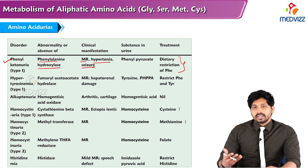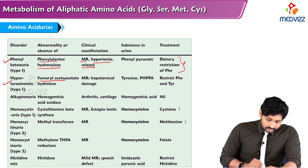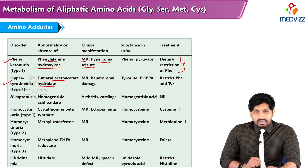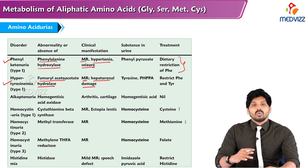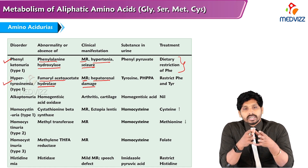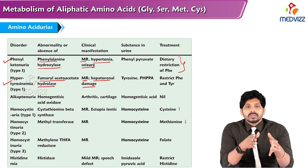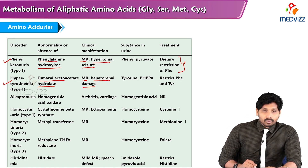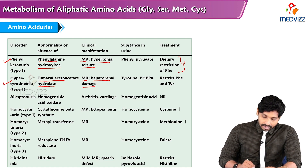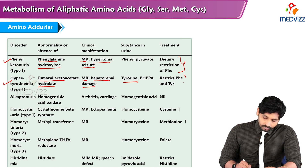The second disorder is hypertyrosinemia, where fumarylacetoacetate hydrolase enzyme is deficient. This leads to mental retardation and hepatorenal damage, because fumarylacetoacetate cannot be converted into acetoacetate and fumarate, so there is no complete catabolism of tyrosine. The products seen in the urine are para-hydroxyphenylpyruvic acid and tyrosine. Treatment is to restrict phenylalanine and tyrosine in the diet.